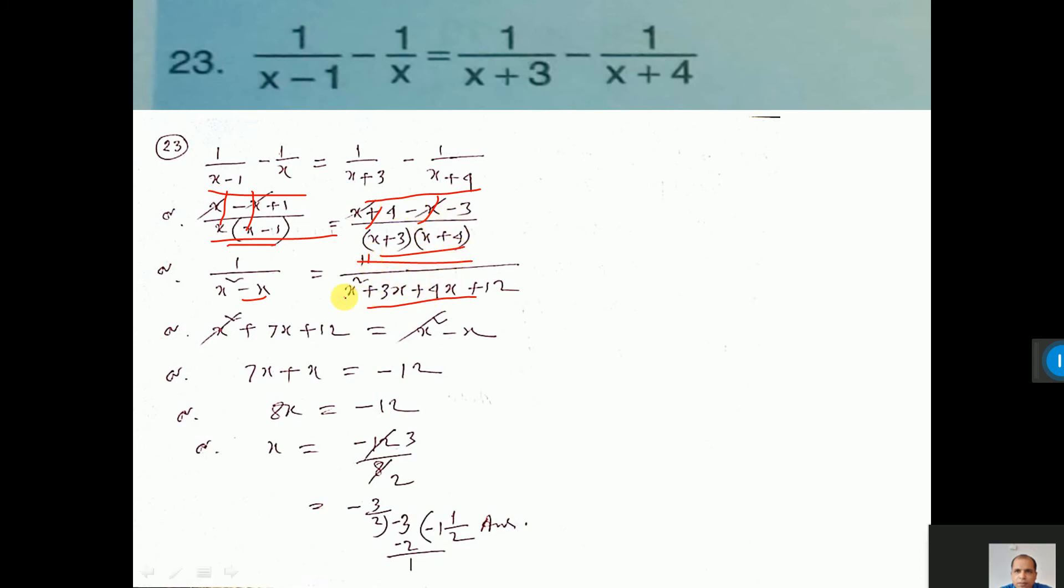Now do cross multiplication. This into this equal to this into this. Then x square cut from both side. So this x you bring here. 7x plus is 8x. 12 if you take that side will be minus. 8 will go as division. Do cut-a-cut, get answer.